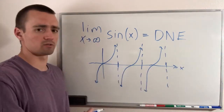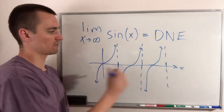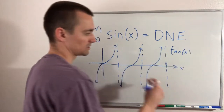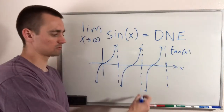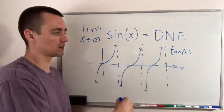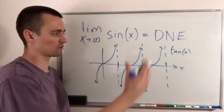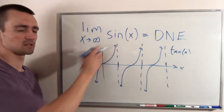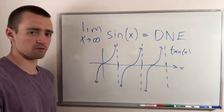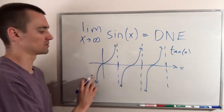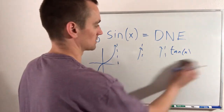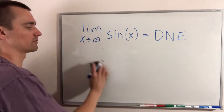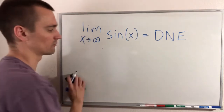So as x goes to infinity, tan of x is just going to go between negative infinity and infinity over and over. So all of our trig functions — sin x, cos x, tan x — the limit as x goes to infinity of all three of those will not exist, because they don't approach one specific y value as x goes to infinity.